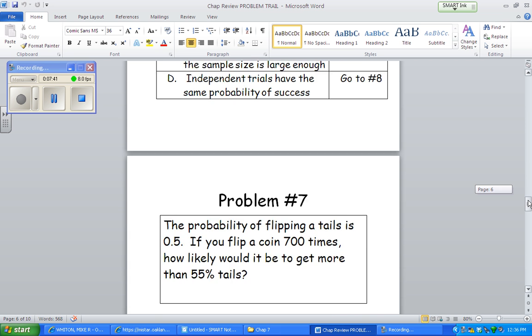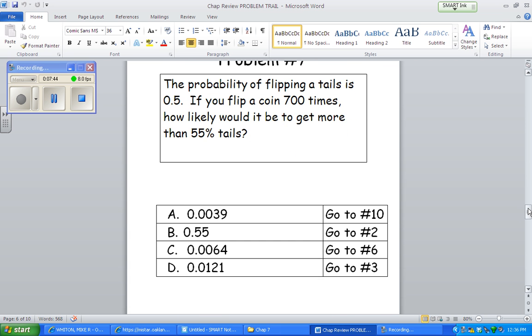Okay, so that's that. Number seven, if the probability of flipping a tail is 0.5, if we flip 700 times, how likely would it be to get more than 55%? Okay, so definitely a proportions problem. They're giving you proportions. This first number is basically the population's parameter. Okay, that's what it is for all tosses.